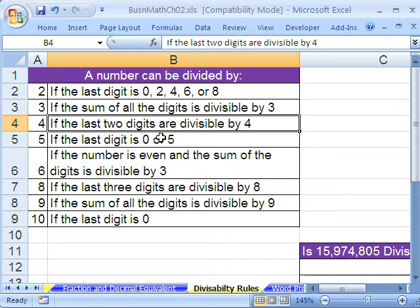What about 4? The last two digits are divisible by 4. 6 if the number is even and, so there's two conditions here, so it's even and the sum of the digits is divisible by 3. 8 if the last three digits are divisible by 8.